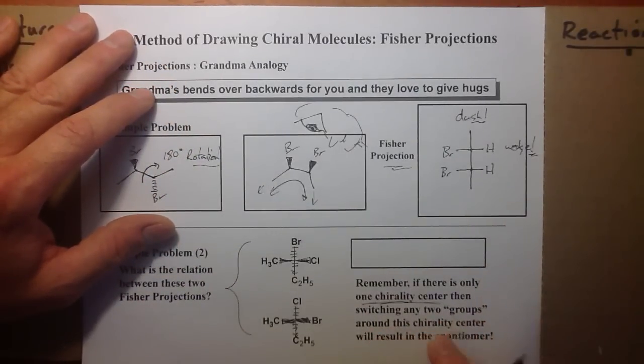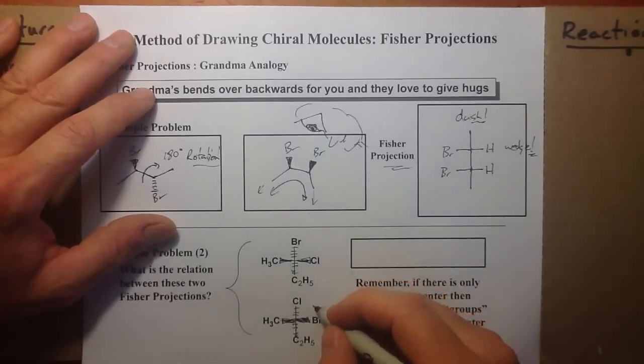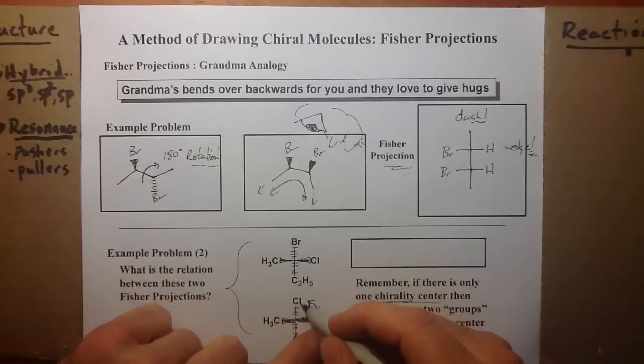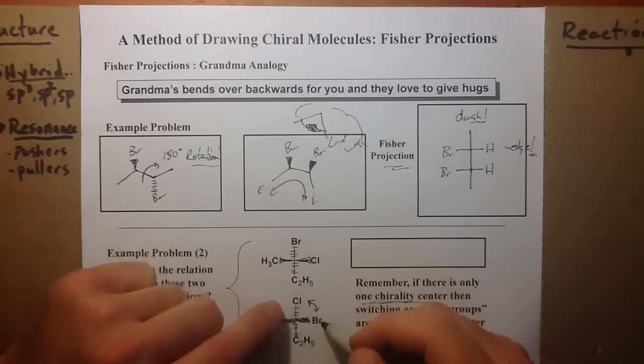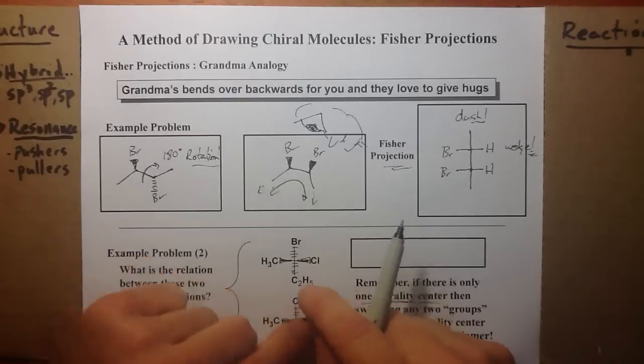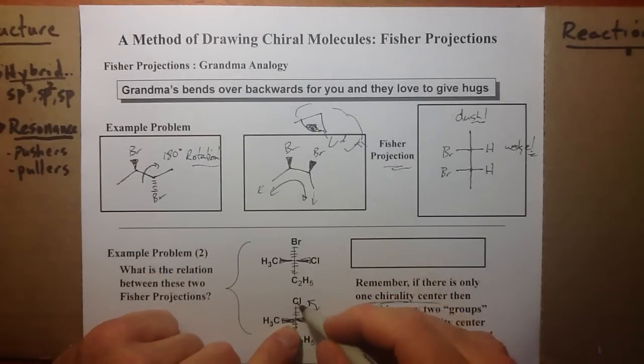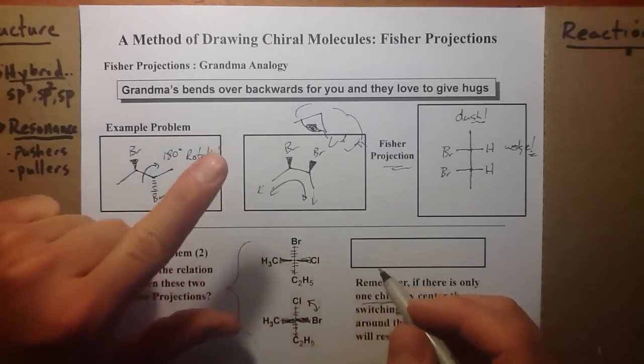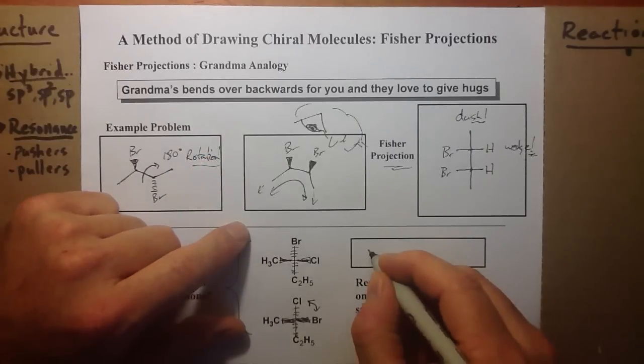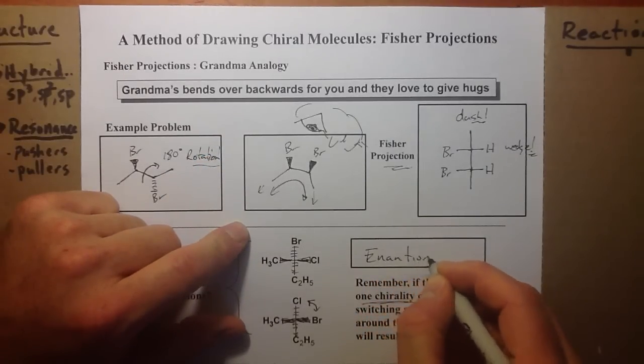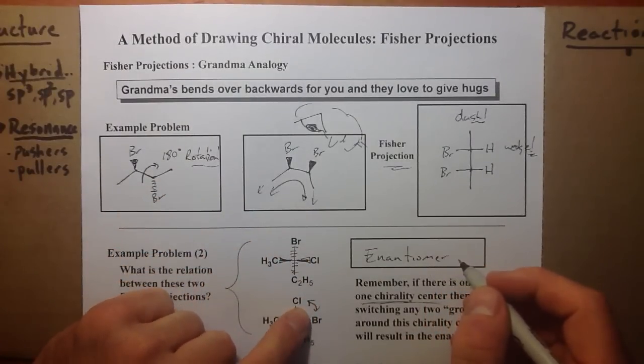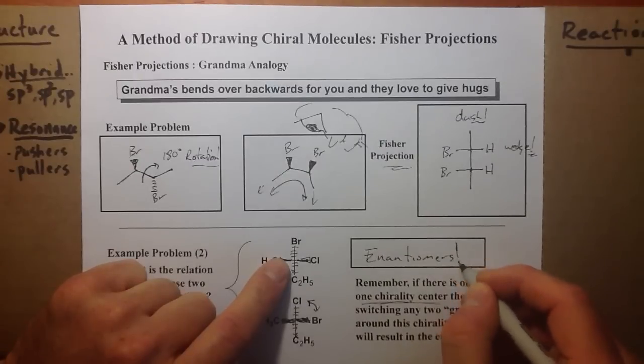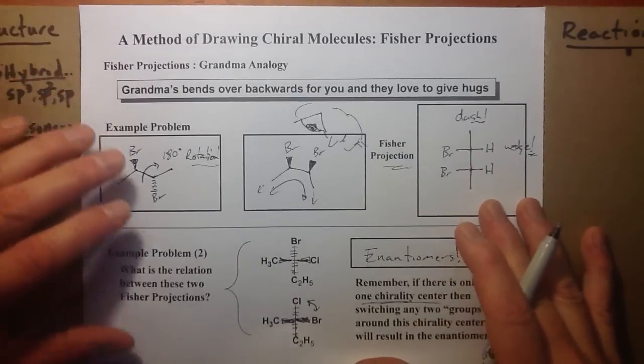This can only be done if there's only one chirality center. Switching any two groups around the chirality center results in the enantiomer. We notice the chlorine and the bromine is the only thing that has to be switched. If I switch these two groups, I can superimpose this structure on this one. But I did that once. These have to be then enantiomeric. You can only do that with structures that have one chirality center.